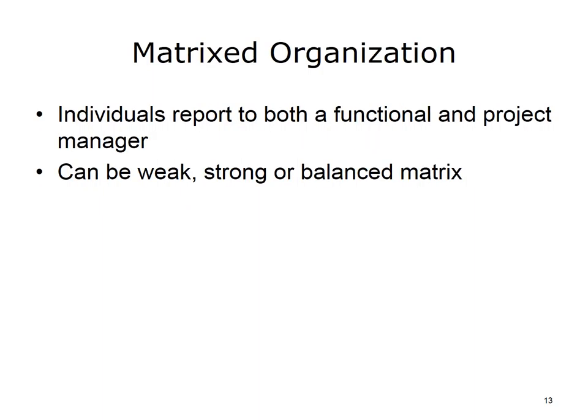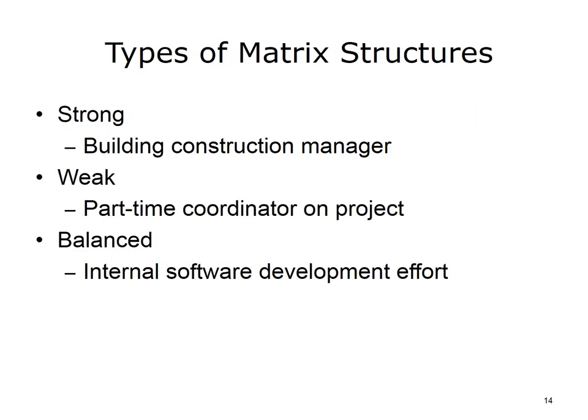In a matrixed organizational structure, the project resources—that is, the people working on the project—have a departmental or functional manager and also report to a project manager. The leadership or authority in the matrixed organization is shared between the project manager and the functional manager. There are three sorts of matrix structures: weak, strong, and balanced. Let's clarify what is meant by a strong, weak, and balanced matrix.